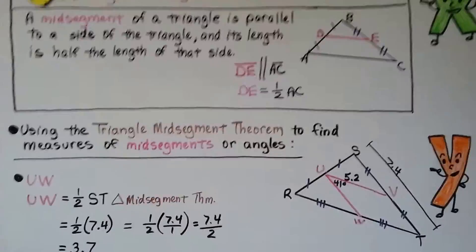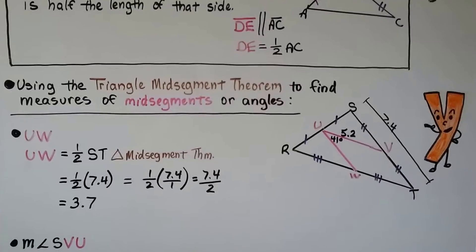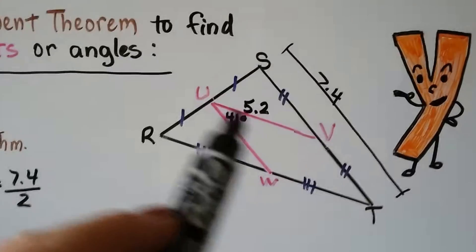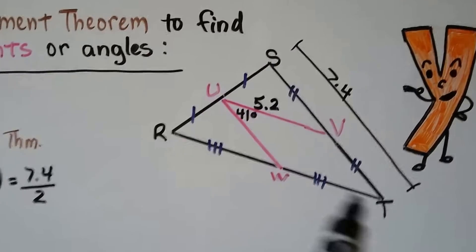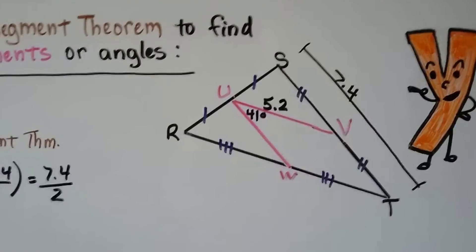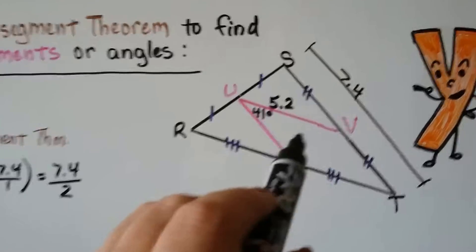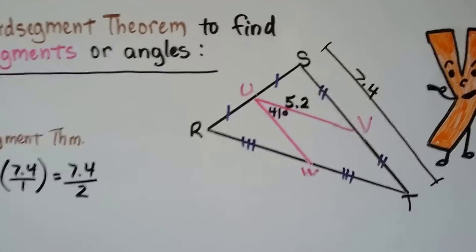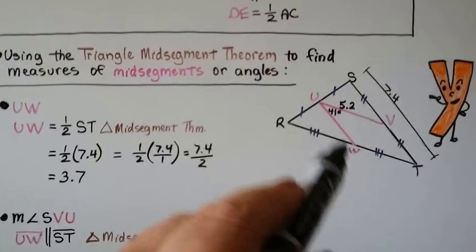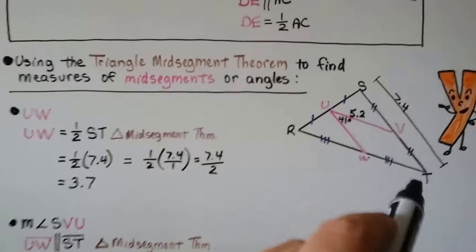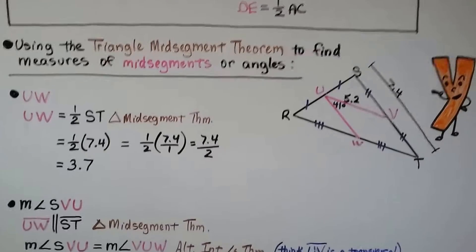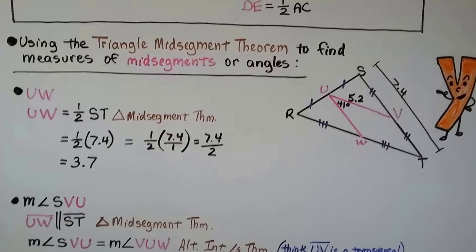Using the Triangle Mid-Segment Theorem to find measures: looking at triangle RST, we can see mid-segment UV, which is parallel to RT, and mid-segment UW, which is parallel to ST. The length of ST is 7.4, the length of UV is 5.2, and angle VUW is 41 degrees. To find UW: UW is half of ST by the Triangle Mid-Segment Theorem, and half of 7.4 is 3.7, so UW equals 3.7.